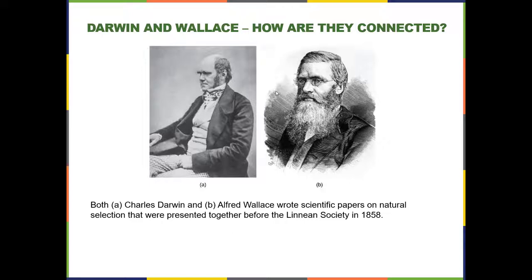Another naturalist, Alfred Russell Wallace — a younger guy compared to Darwin — went to Malaysia and spent time there looking at a lot of birds, which Darwin also studied extensively. By studying birds, both men were ruminating on the concept that eventually became what we now know as natural selection.